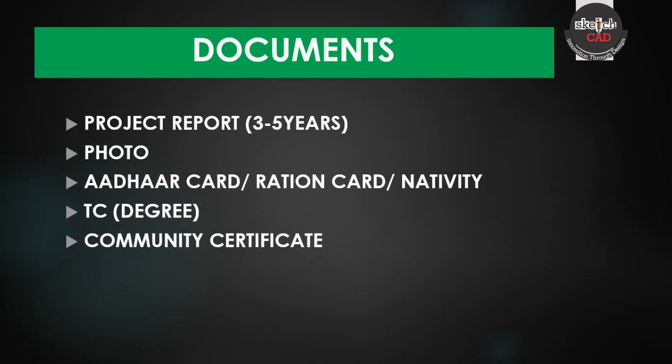If you have a TC, you can use it as proof. You can also use GST quotations for your machinery. In total, there are 6 key documents that are most important for this scheme.